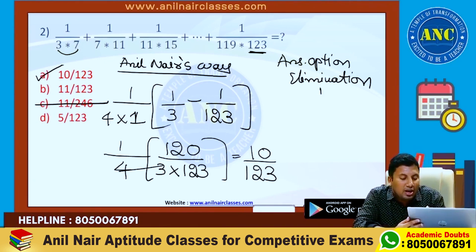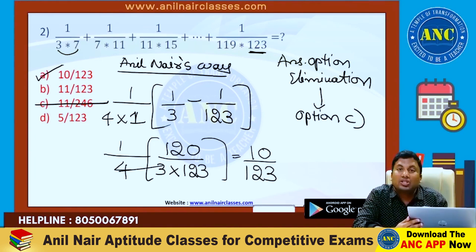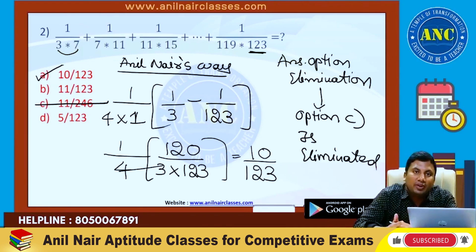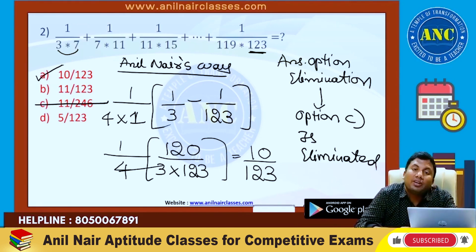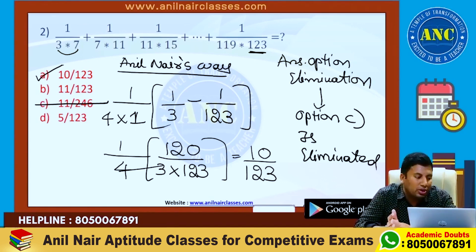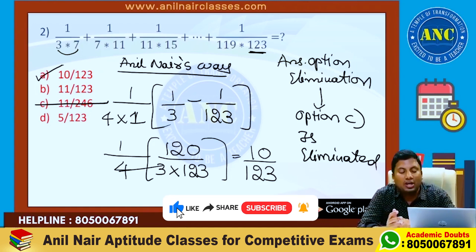Just by looking at the question itself, only option C is eliminated, so method 2 is used here. Option C is eliminated. What if such situations arise where only one option is eliminated and three options are close to each other — then what should we do? In such a case, you can use the approximation approach.